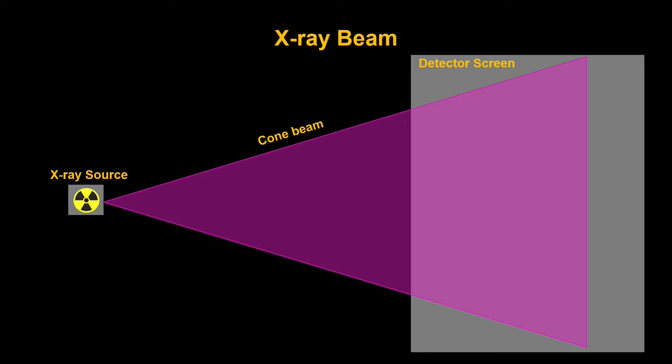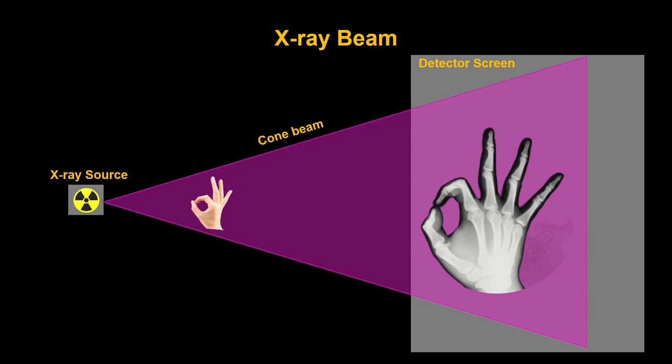There are some interesting consequences of the cone beam geometry that I'd like to highlight. Mainly, if we have a sample between the source and the detector, the image that will appear on the detector is larger than our sample. This is because the X-rays are divergent, and so after they interact with the sample, they're still spreading out before they hit the detector. This magnifies the image of our sample on the detector screen. And when we move the sample closer to the X-ray source, we can magnify the image even further. The opposite is also true. When you move the sample closer to the detector relative to the source, it'll appear smaller. This is just like when you make a shadow with your hand on the wall. The closer you are to the light source, the larger your hand will appear.